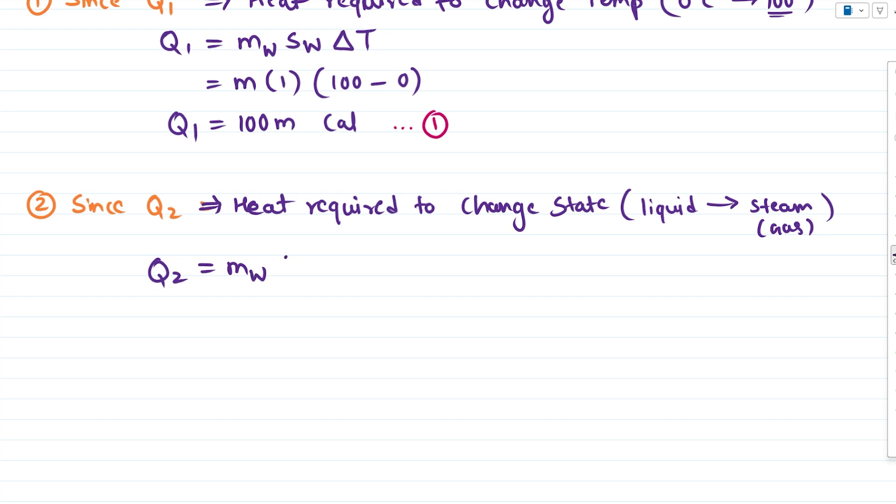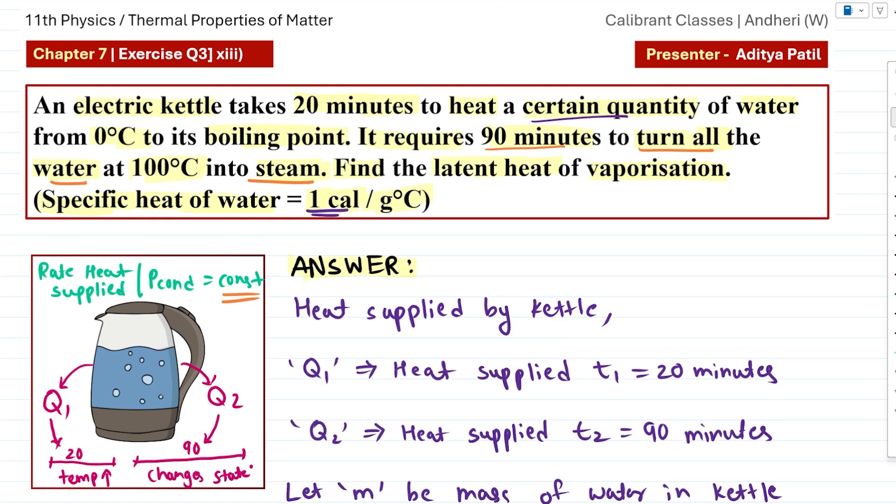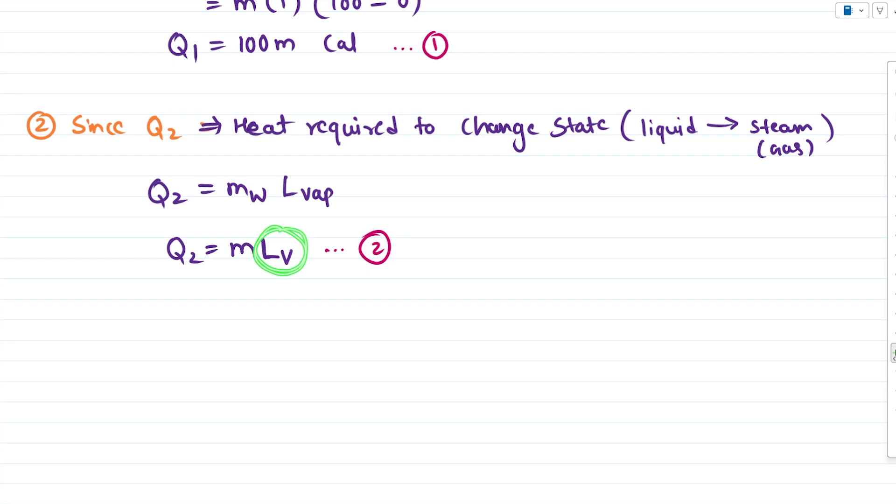By definition this heat is calculated as mass of the material times the latent heat of vaporization for that material. So Q2 is mass of water we assumed as M times latent heat of water LV. This is what we have to find. Let me mark this as expression number 2. We have got an expression of Q1 in terms of M and Q2 in terms of M, but our target is to find the latent heat of vaporization for water which is this quantity LV.